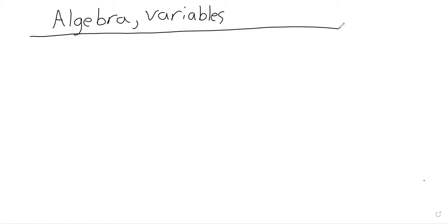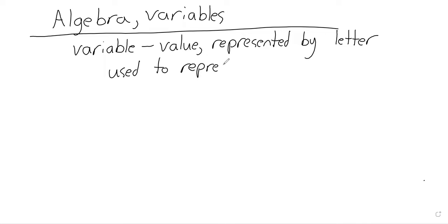We have used variables during this class already. It's really hard to talk about math without using variables. But a variable is a value, usually represented by a letter. X and Y are kind of the classic letters, but you also see others. And it's used to represent either unknown or arbitrary numbers.